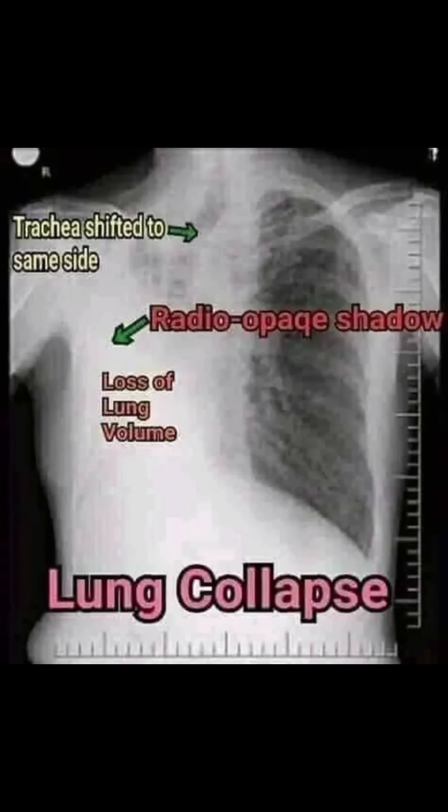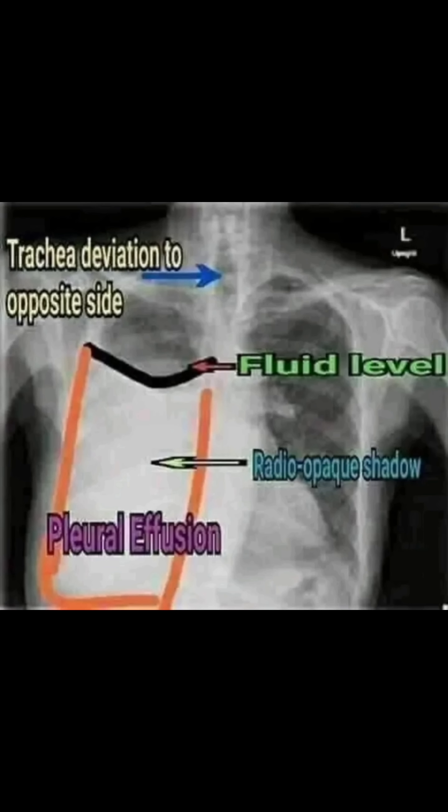In this, the trachea is deviated to the same side with homogenous opacity, suggestive of lung collapse.